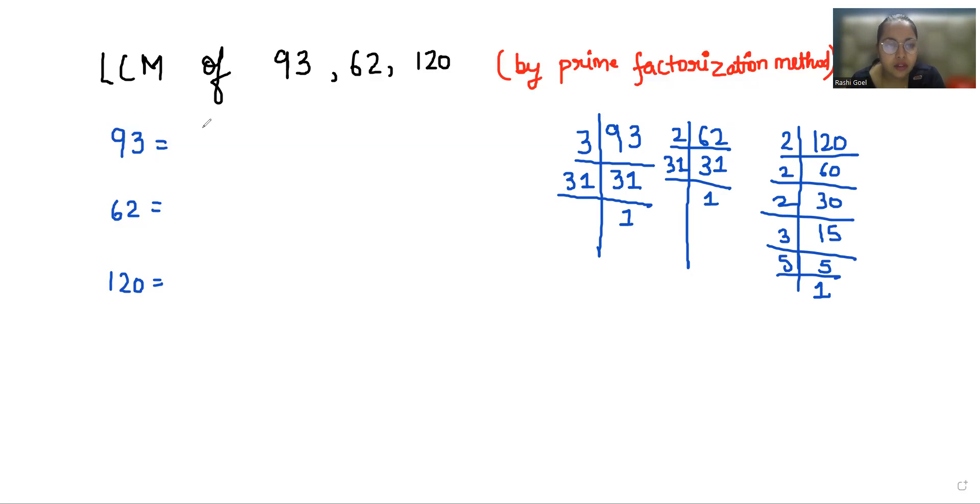Now 93 is 3 power 1 times 31 power 1. And 62 is 2 power 1 times 31 power 1. 120 is 2 power 3 times 3 power 1 times 5.